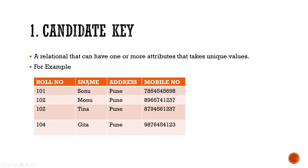Role number is unique. Can student name be unique? No, because the same name of students can repeat — Sonu's name can be the same, Tina's name can be the same. Similarly, address can also be the same. But mobile number will not be the same — mobile number will remain unique, every number will be different. So role number and mobile number can take unique values, and that is where we set the candidate key.